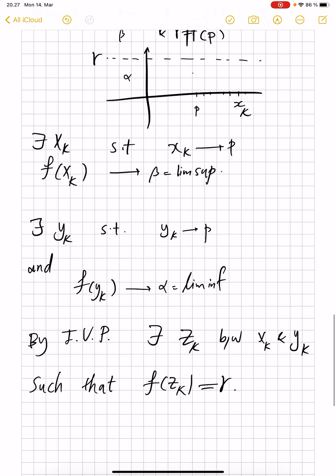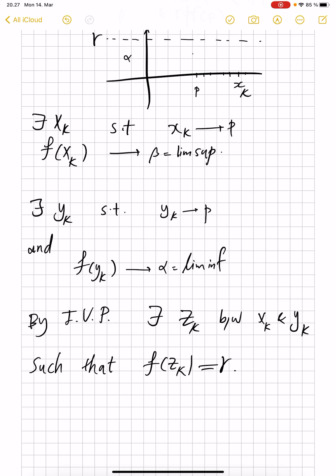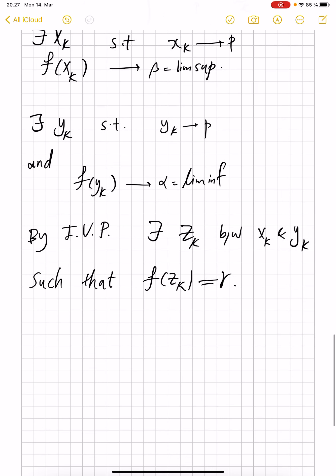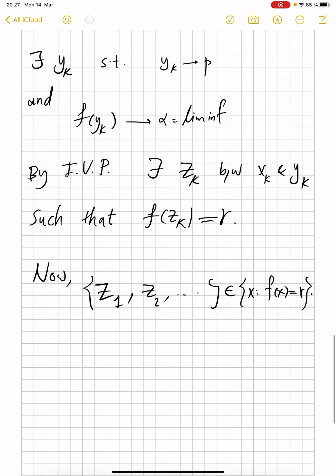Because r is between these values, remember that x_k and y_k values are close to α and the other is close to β. So r is between them. There is some value z_k where f(z_k) is r. Now, z_k, let's be precise, z_1, z_2, all of this sequence belongs to the set of x's where f(x) equals r, because every single one of them is sent by f to the value r.